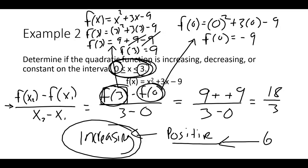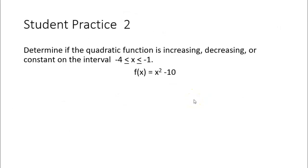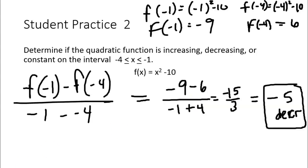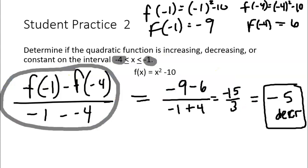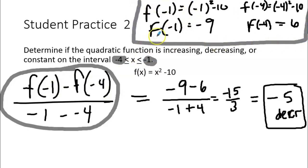For the student practice with an equation: the x values given are −1 and 4. Set up the formula f(4) minus f(−1) over 4 minus (−1). Calculate f(−1) = −9 and f(4) = 6. Replacing those values and noting the double negatives become a positive, we simplify to get −5. Since the average rate of change is negative, the function is decreasing on that interval.